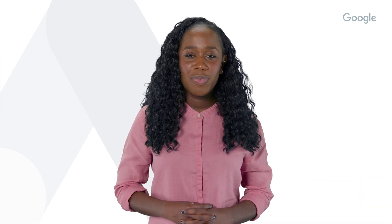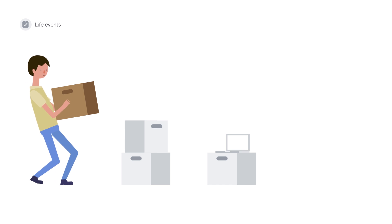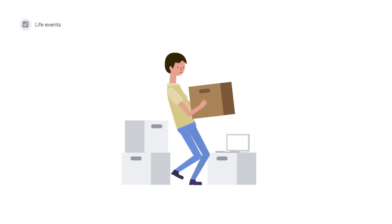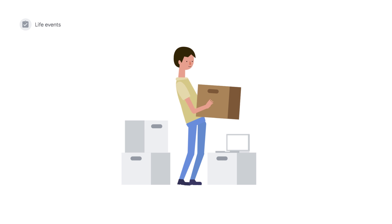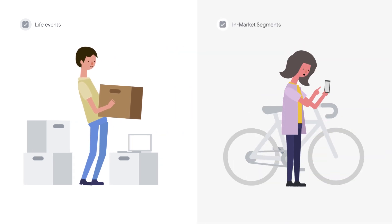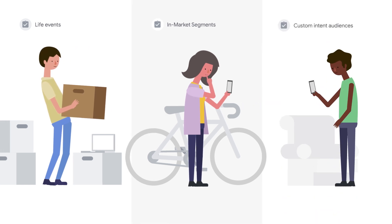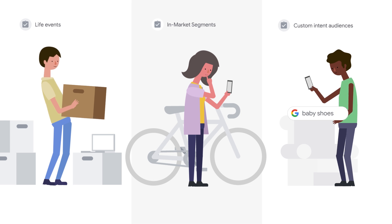Intent audiences leverage intent signals from Google Search and across the web. They include life events — for viewers going through important life milestones like graduating from college or moving homes; in-market segments — for viewers actively considering buying a certain product or service; and custom intent audiences — for viewers who search for your product or service on Google.com.